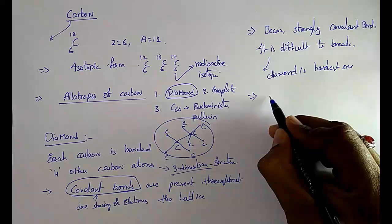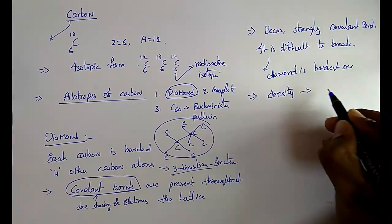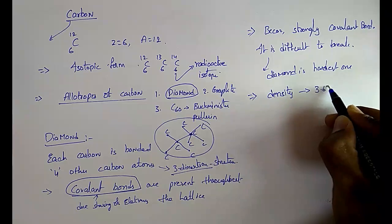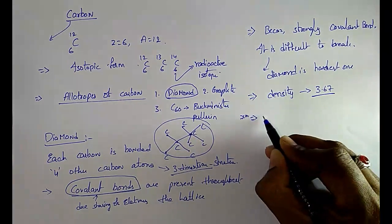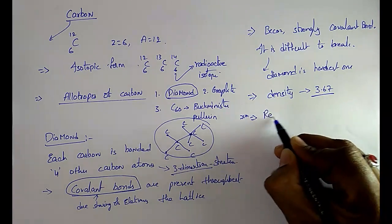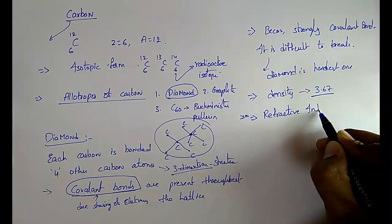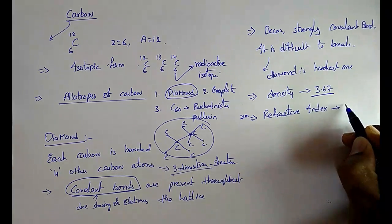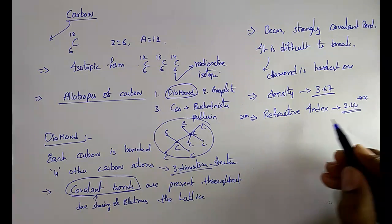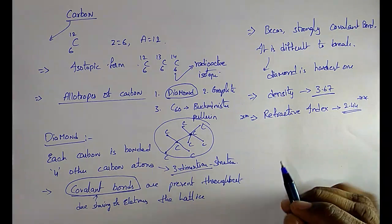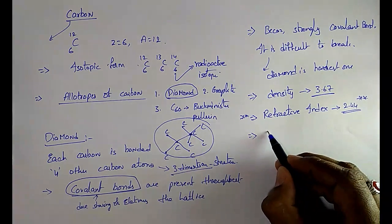The density of diamond is 3.67 — very important. And the refractive index of diamond is 2.44 — very important. Also, diamond is highly poisonous.